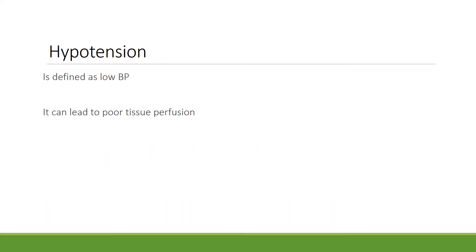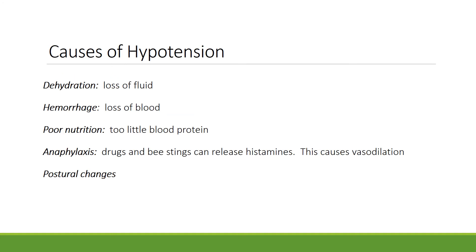Hypotension is defined as low blood pressure. The prefix hypo means low, underneath, or below, and it can lead to poor tissue perfusion. Causes of hypotension include dehydration (loss of fluid), hemorrhage (loss of blood), poor nutrition (usually too little blood protein), and anaphylaxis — where drugs and bee stings can release histamines and cause vasodilation.